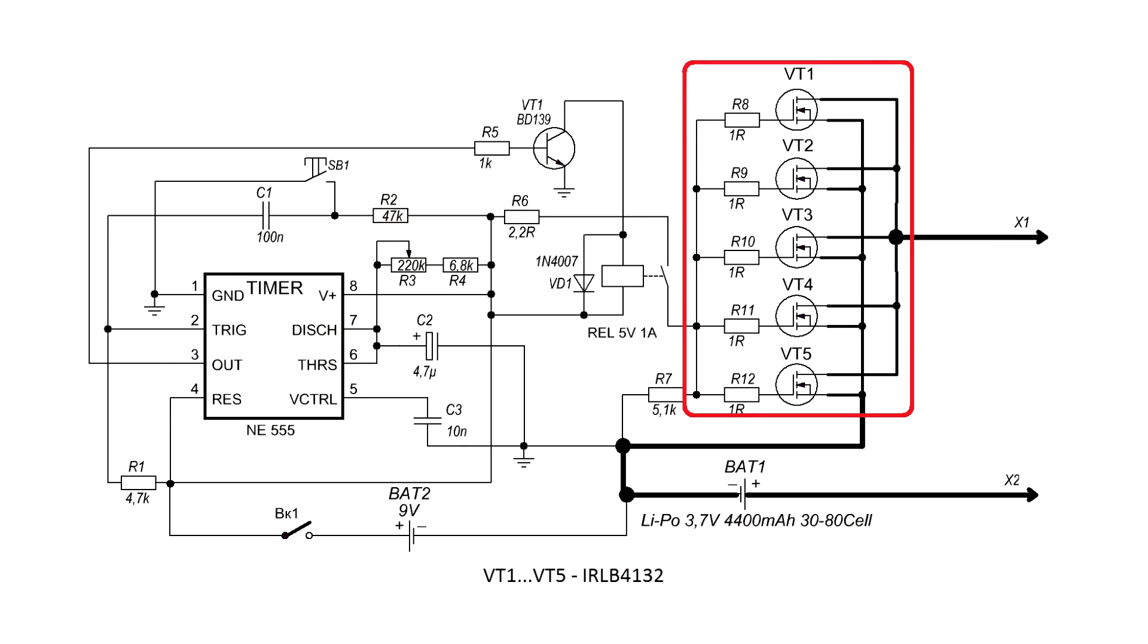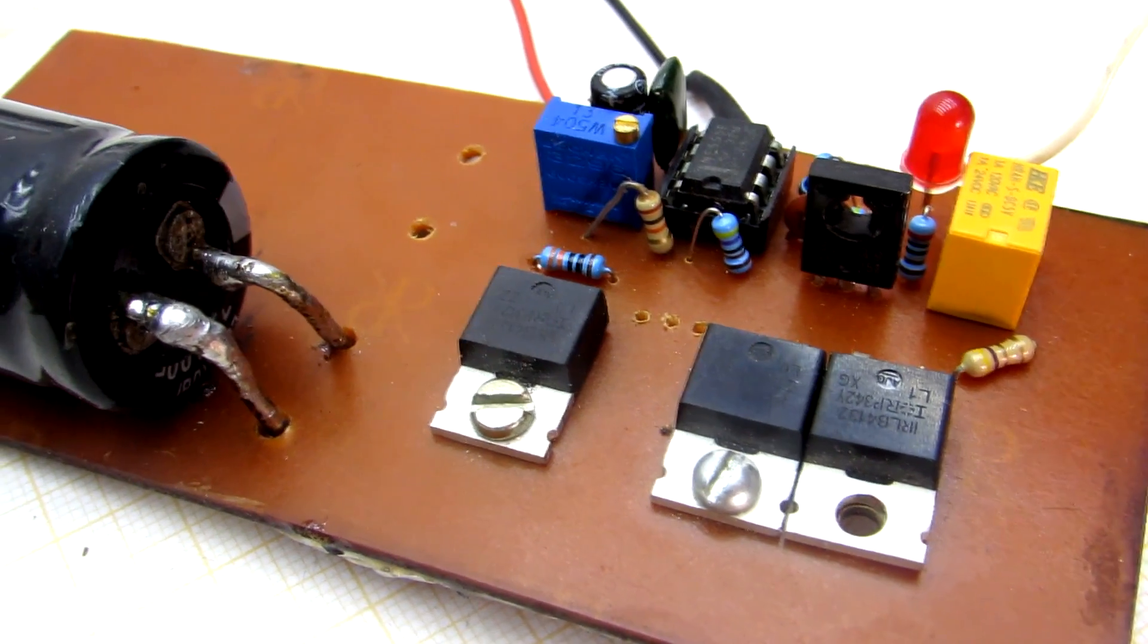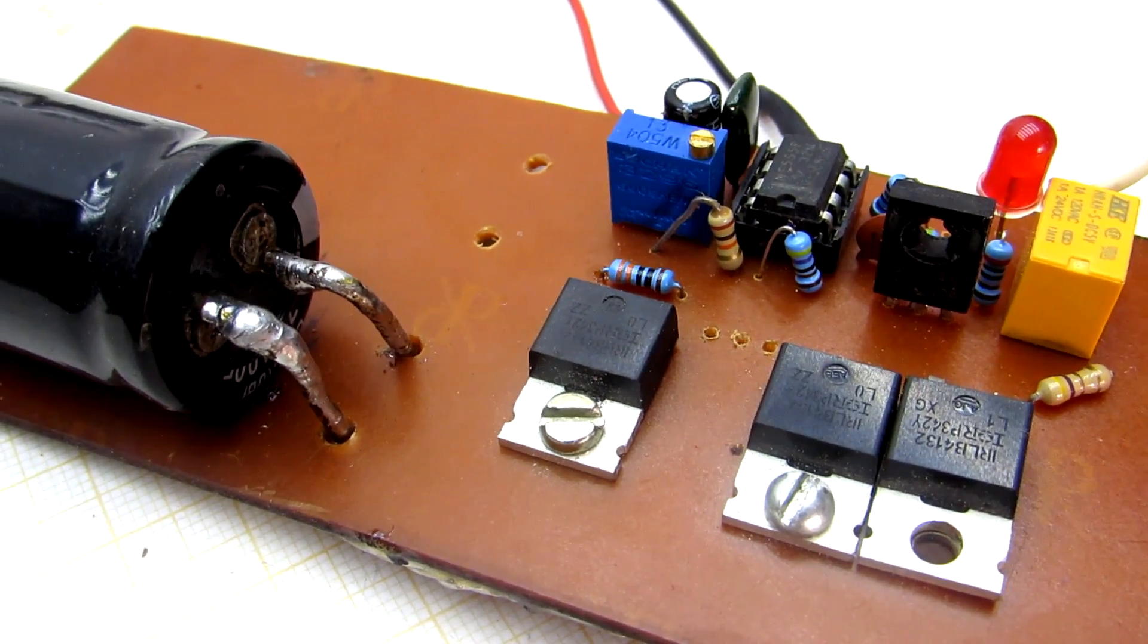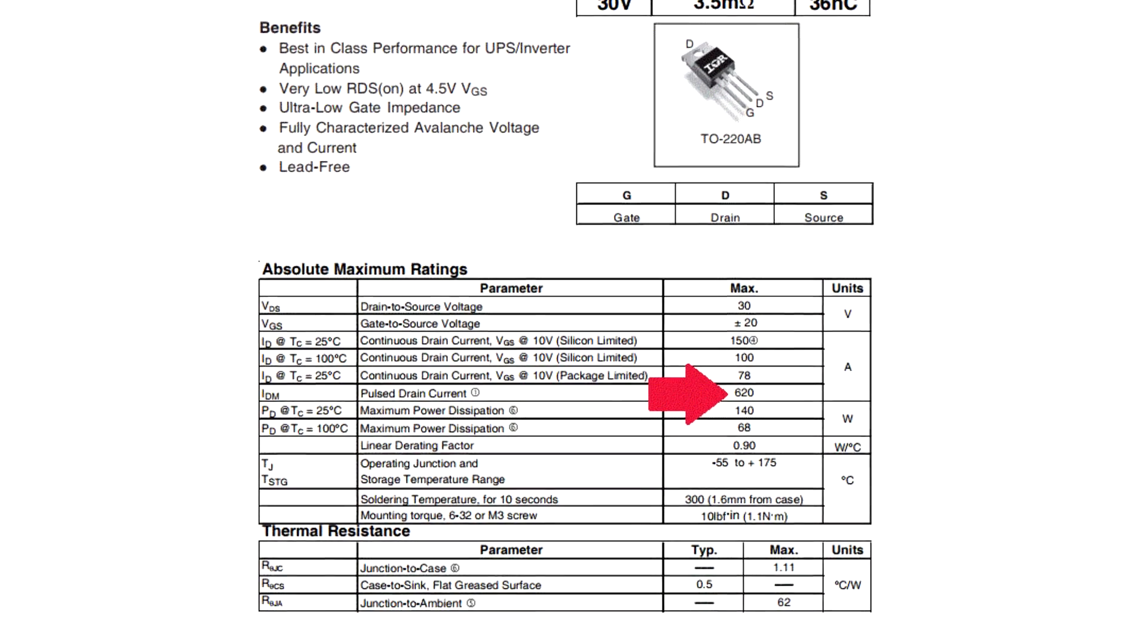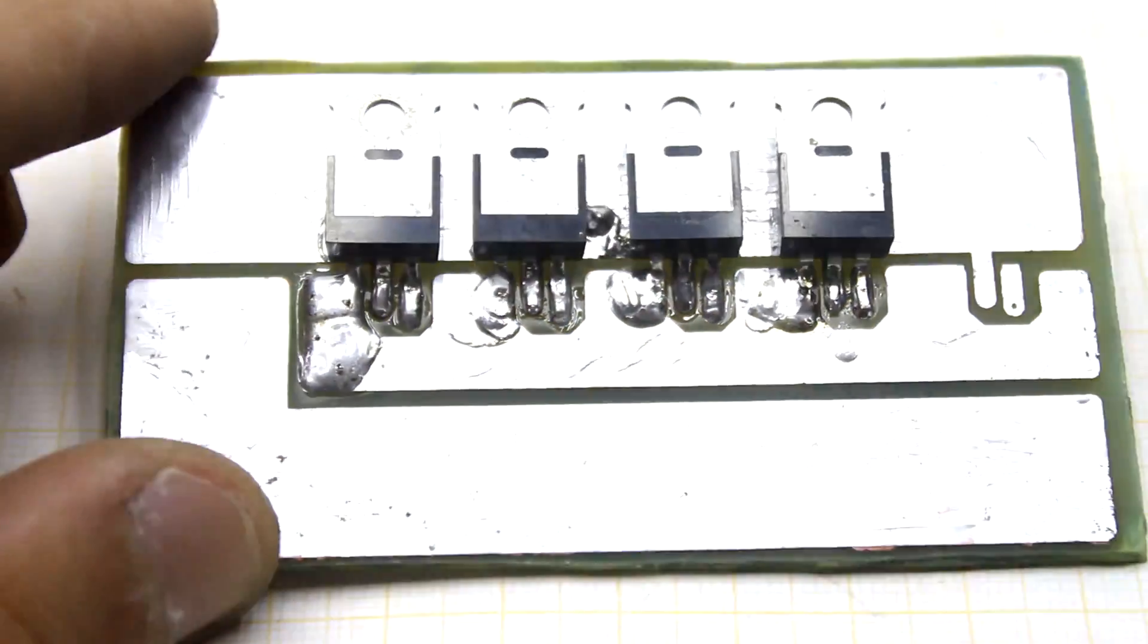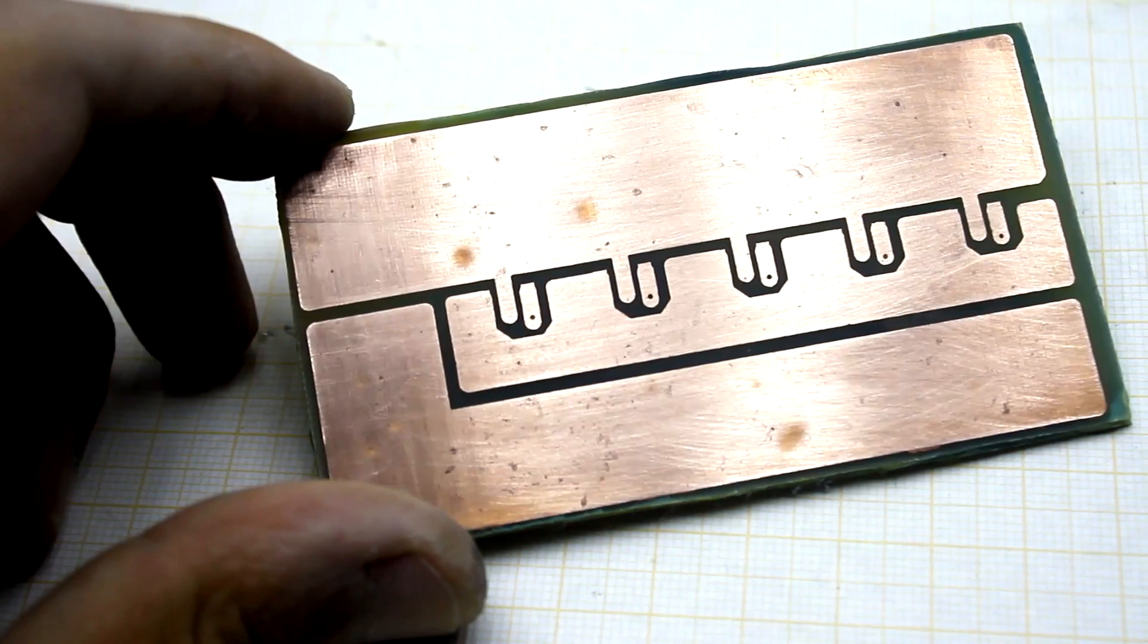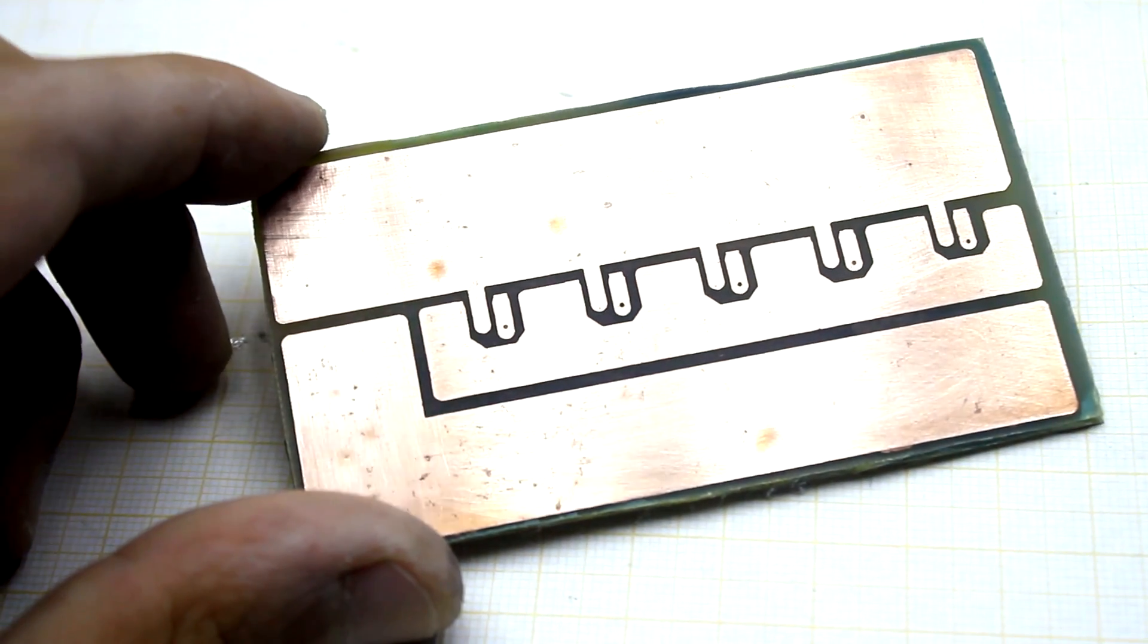As powerful FETs, I used four high-power, low-voltage IRLB4132. For a short time, each such FET is able to commute currents up to 620 A and, as all four keys are connected in parallel, the maximum current will be more than 2000 A. The PCB is designed for five FETs in theory. You can use more.